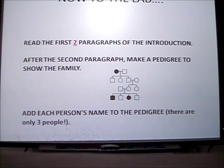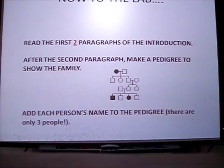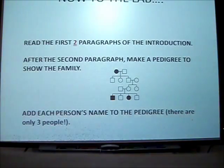So right now, what you should do is read the first two paragraphs of the introduction. After the second paragraph, make a pedigree to show the family. Take a look at the sample pedigree that I have on the board — this is way bigger than what you are going to need to make. You will only have three people in this pedigree after paragraph two. Remember that females are circles, males are squares. You will not do any shading. Pause the video for a moment, make the pedigree, and add each person's name to the pedigree.